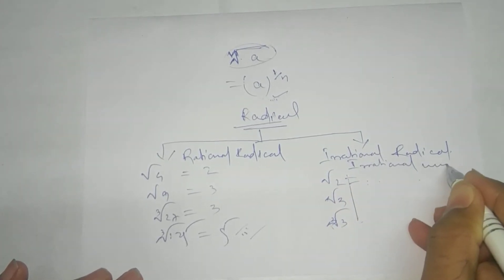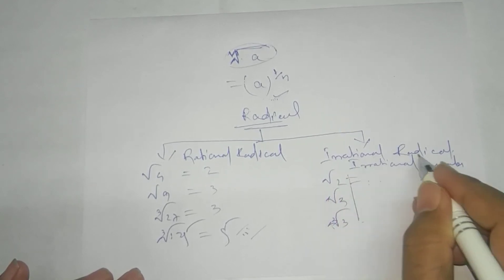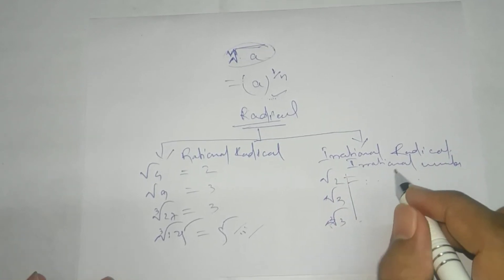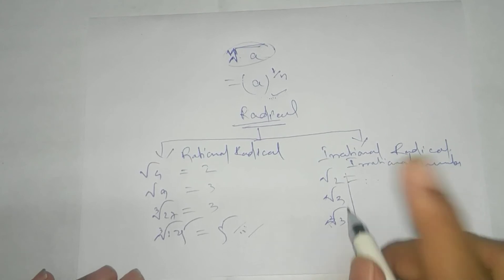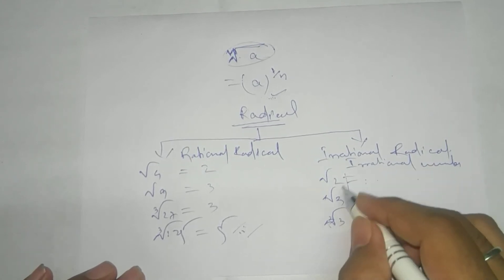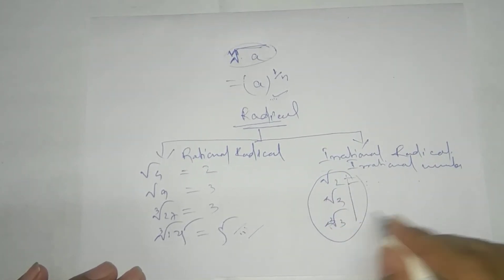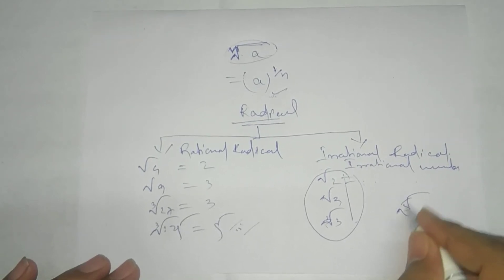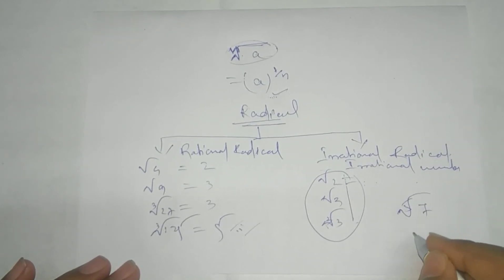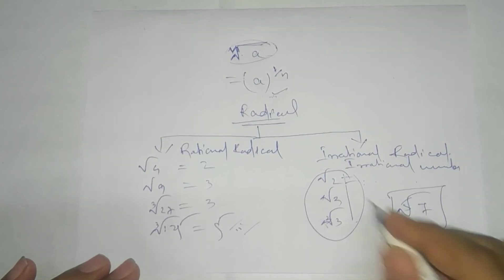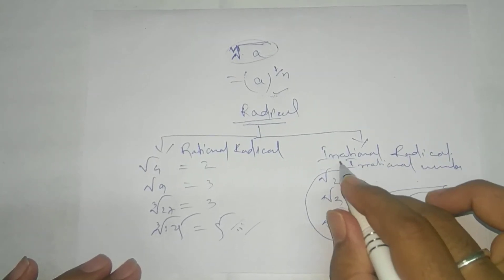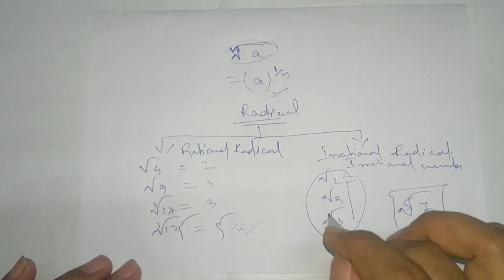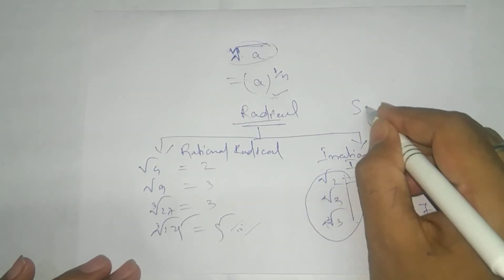So, this type of irrational number we call irrational radical and they are irrational number also. The irrational radical's special name is there. This type of number, wherever you will take this one, nth root of 7 or whatever you take. That is irrational radical have a special name and we call SIRD.